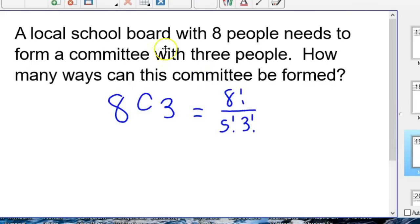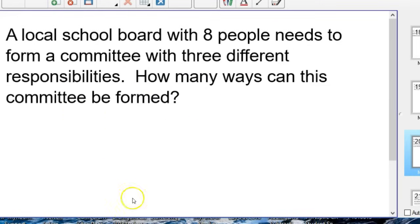So there's 56 ways, if you have a school board with eight people, there's 56 ways to make a committee of three. So, the next thing, let's see if we've got another problem on here. Yeah. So a local school board with eight people needs to form a committee with three different responsibilities. How many ways can this committee be formed?